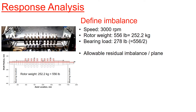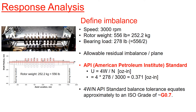Now let's perform the rotor response analysis using the Excel rotor software. To perform the rotor response analysis, you first need to define the imbalance of the rotor. There are many ways to define the imbalance, but the most widely used specifications are API standard and ISO grade. API is an abbreviation of American Petroleum Institute, and their imbalance spec is defined as four times the weight divided by the rotor speed. This imbalance spec is equivalent to the ISO grade of 0.7.